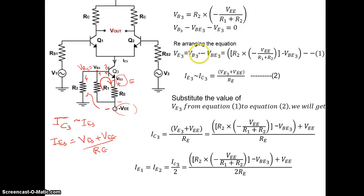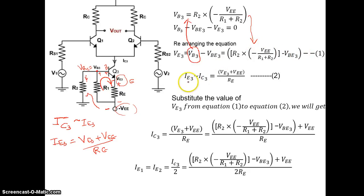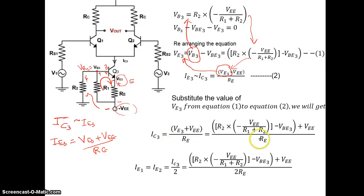We have the value of VB3 from the earlier equation. Substituting the value of VBE3 into the expression for VE3, we now substitute this value of VE3 into IC3 equals VE3 plus VEE divided by Re, obtaining the final expression for IC3.